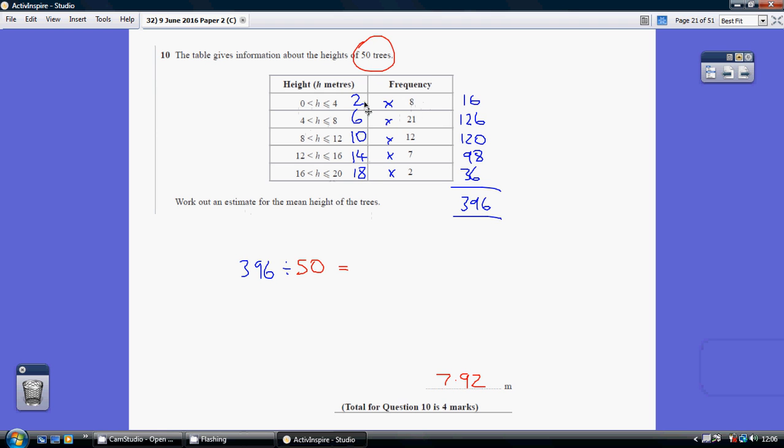So we're assuming 8 trees are 2 metres high. 21 trees are 6 metres high. 12 trees are 10 metres high, and so on. This column being the midpoint. Obviously, you can just see the midpoint.